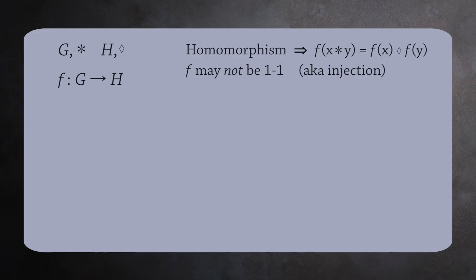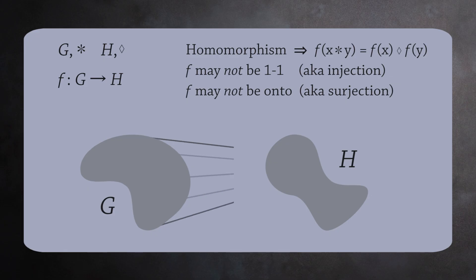Now, a homomorphism does not have to be one to one. It does not have to be an injection. It's possible for many elements in G to map to the same element in H. Similarly, f does not have to be onto, it does not have to be a surjection.